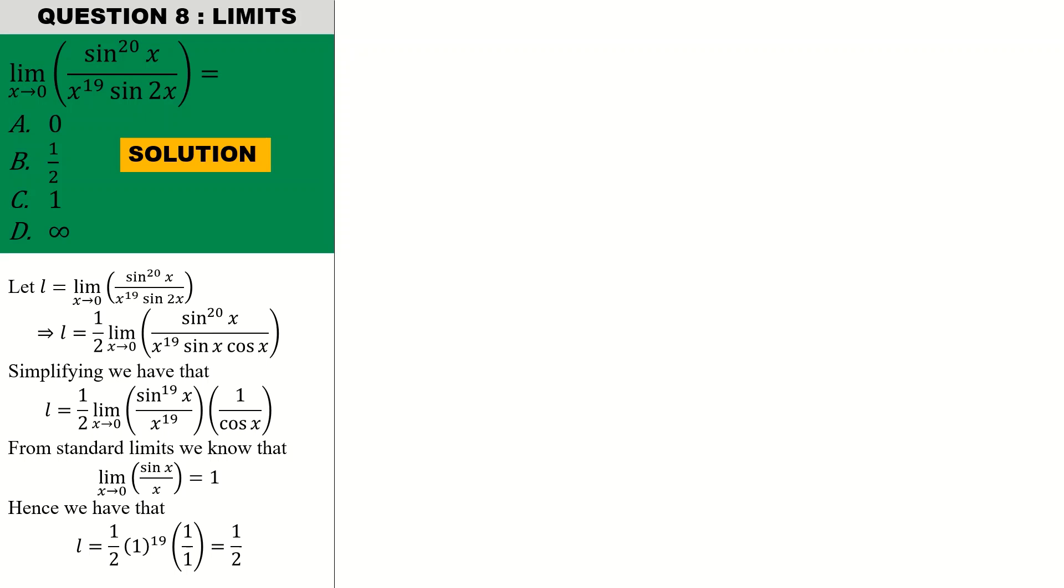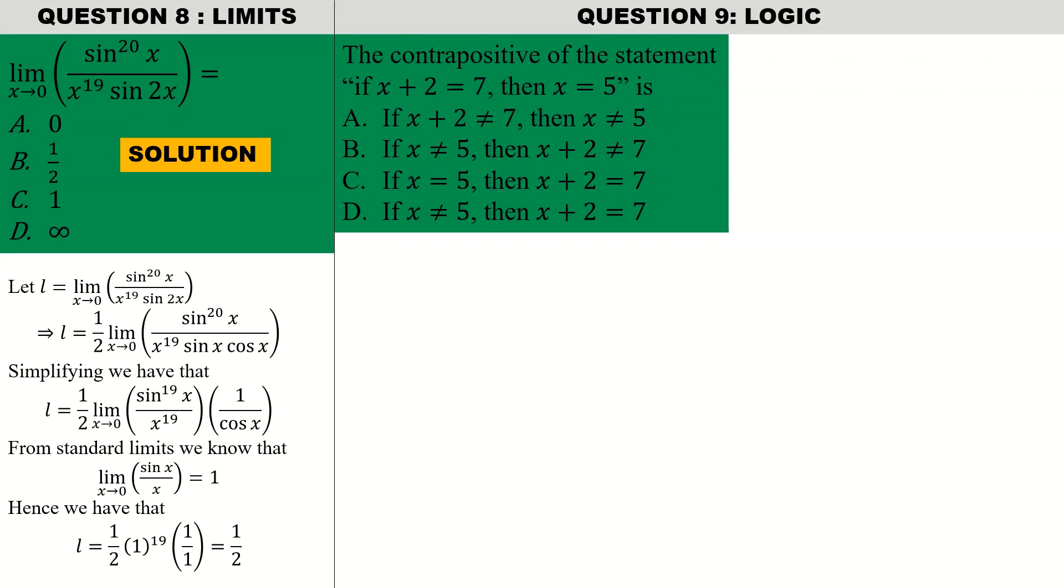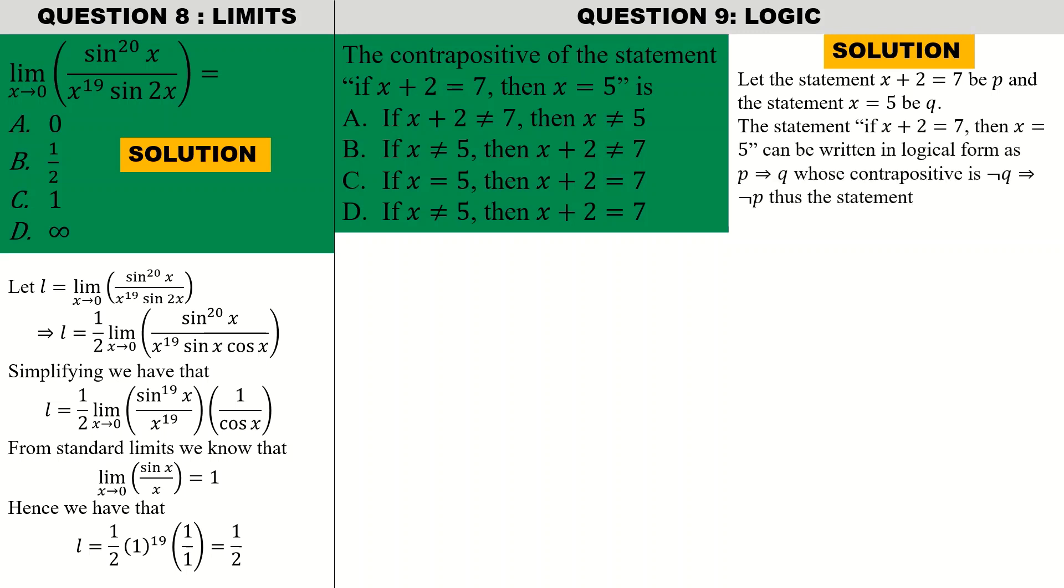Question nine on logic. It reads: the contrapositive of the statement. If the statement has been given and you want to find a contrapositive, it is simply not q implies not p, because the statement is p implies q. From there we can write out the contrapositive and we get our response: if x is different from 5, then x plus 2 is different from 7. So option B is correct.